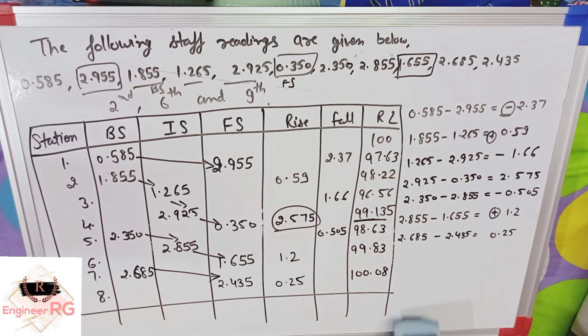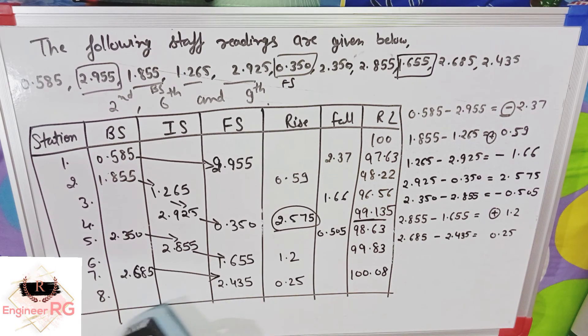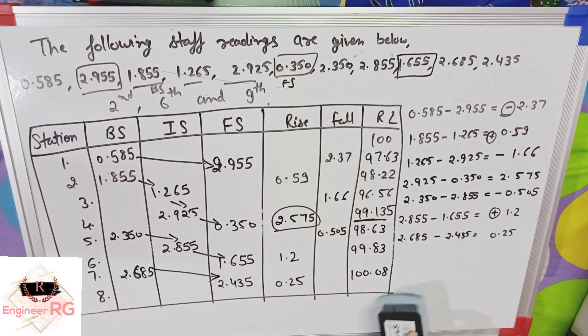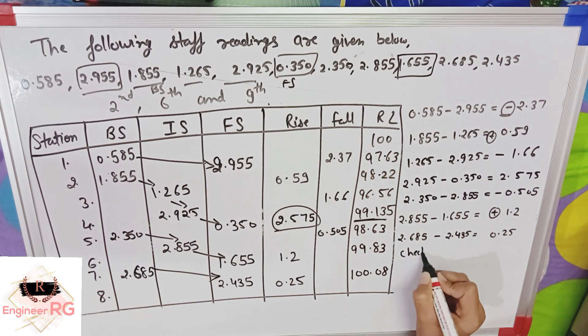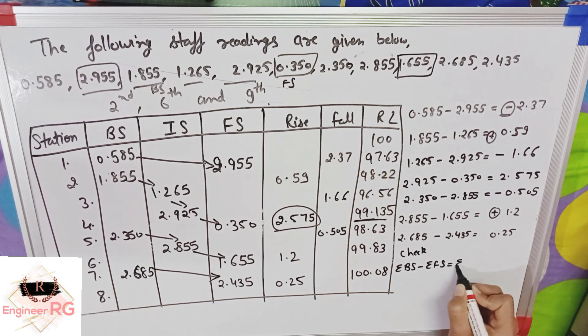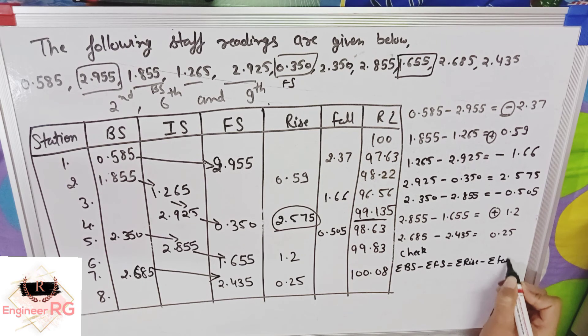Now in this question, we have removed the RL. All the work has been done. But check also needs to be added. This question is correct or not? So what is check? Check is, summation of back side minus summation of fore side equals summation of rise minus summation of fall equals last RL minus first RL. So let's take a look.